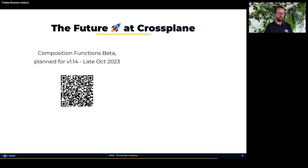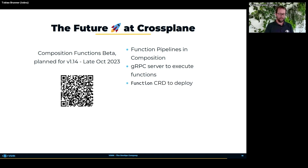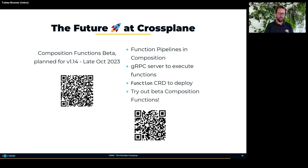What is the future of composition functions? It's planned for the 1.14 release to move from alpha to beta. The design proposal introduces function pipelines in compositions and a gRPC server which executes functions directly in memory — something we did ourselves before. It will also introduce a Function CRD to deploy functions, so Crossplane can ensure the connection is secured. Just recently I found the call to action to try out the beta composition functions — the QR code links directly to the GitHub discussion where you can provide your input.